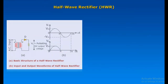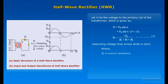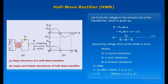For the Half-Wave Rectifier, let VI be the voltage to the primary coil of the transformer, where RS is source resistance, RL is load resistance, and RF is forward resistance. In the half-wave rectifier, I equals IM sin(ωT) where 0 ≤ ωT ≤ π, and I equals 0 where π ≤ ωT ≤ 2π.